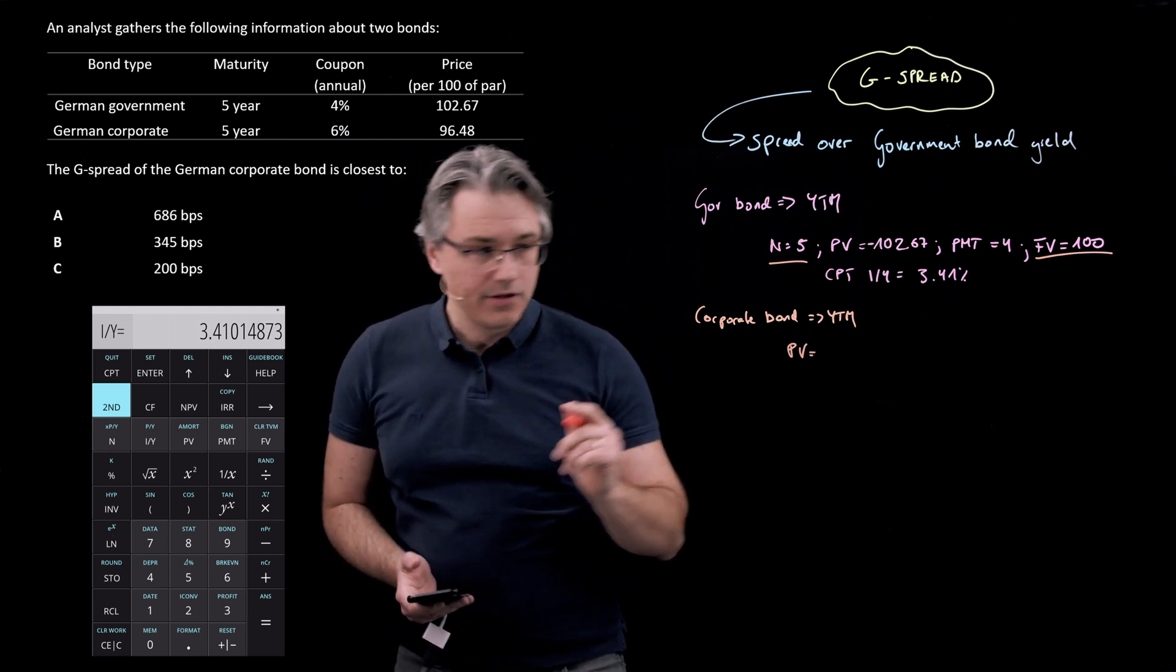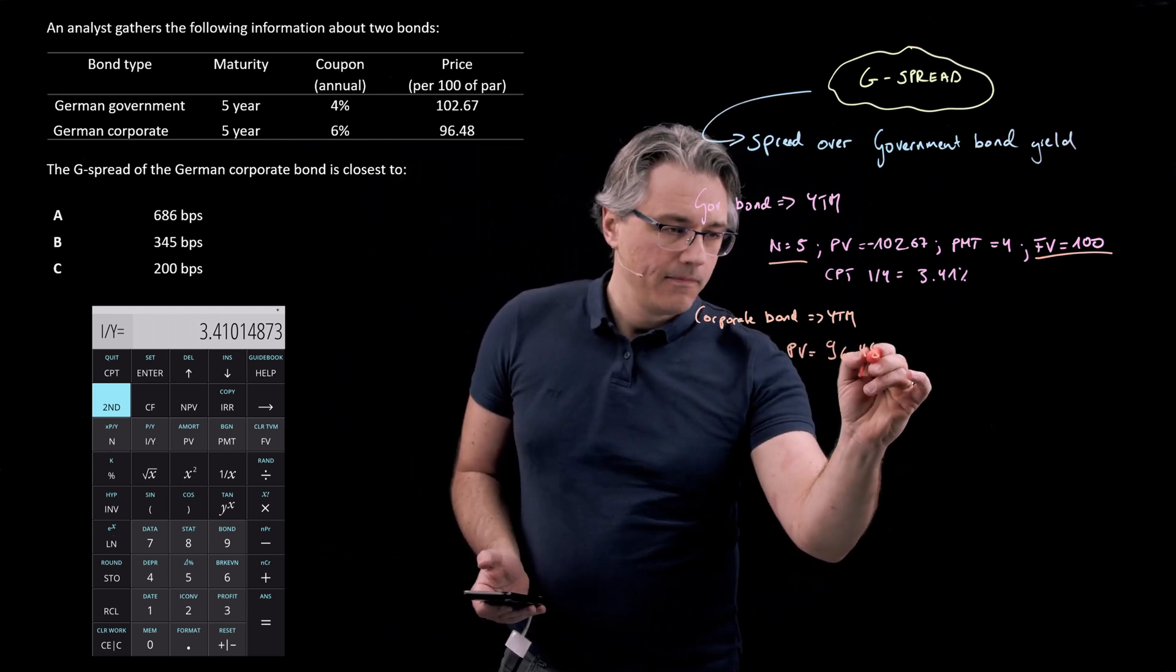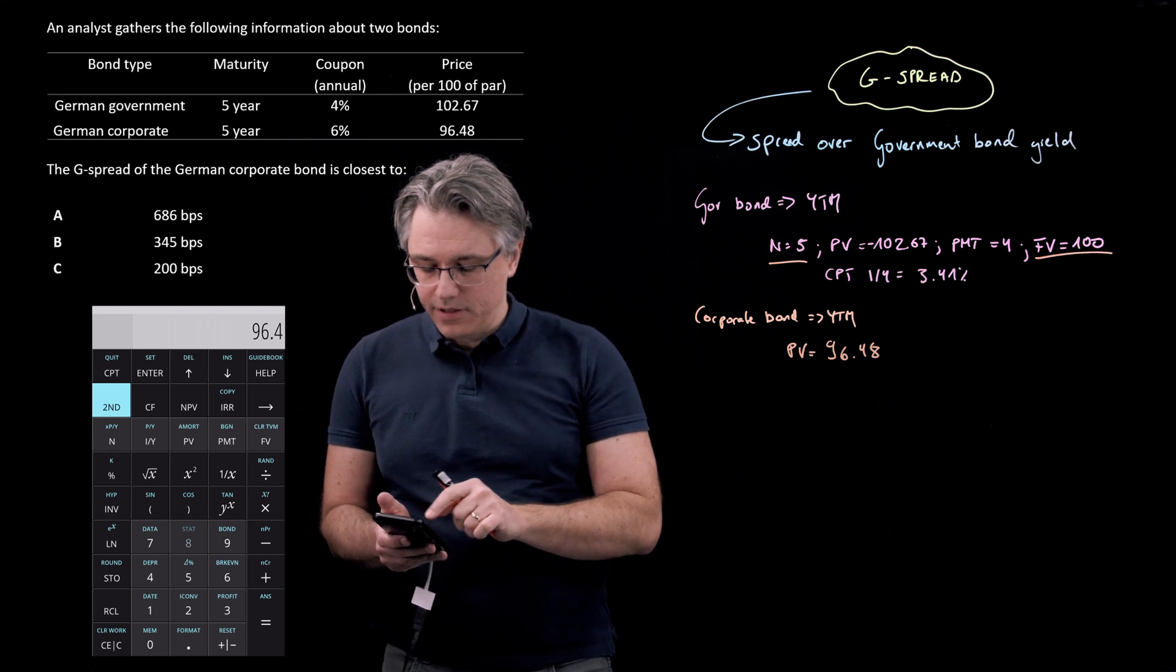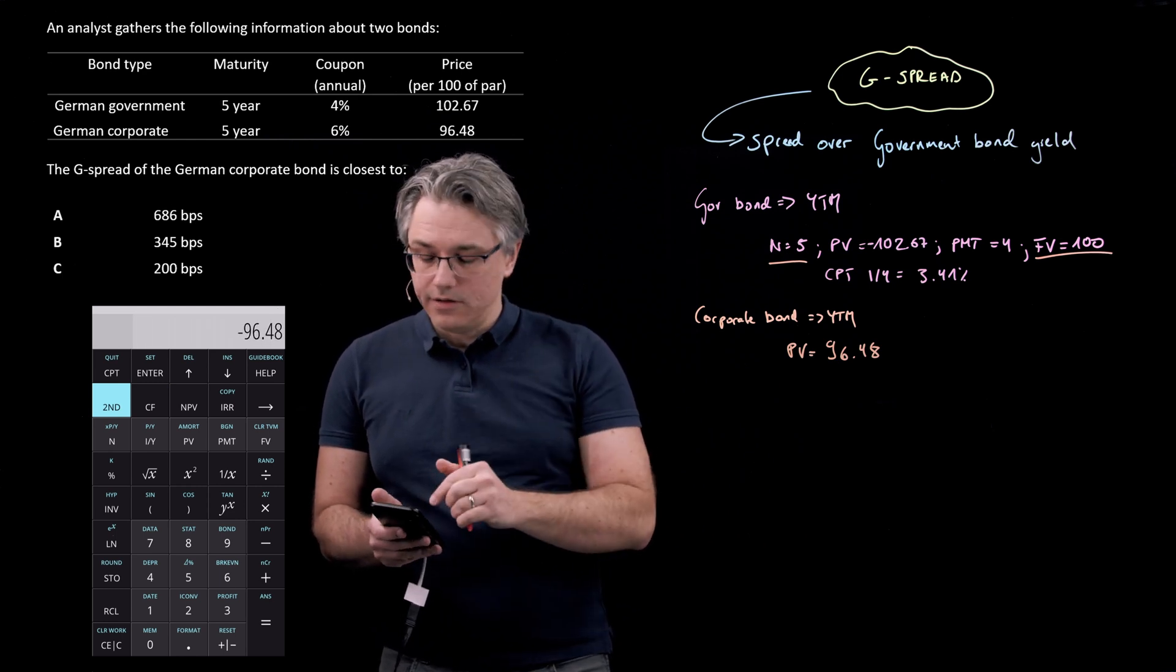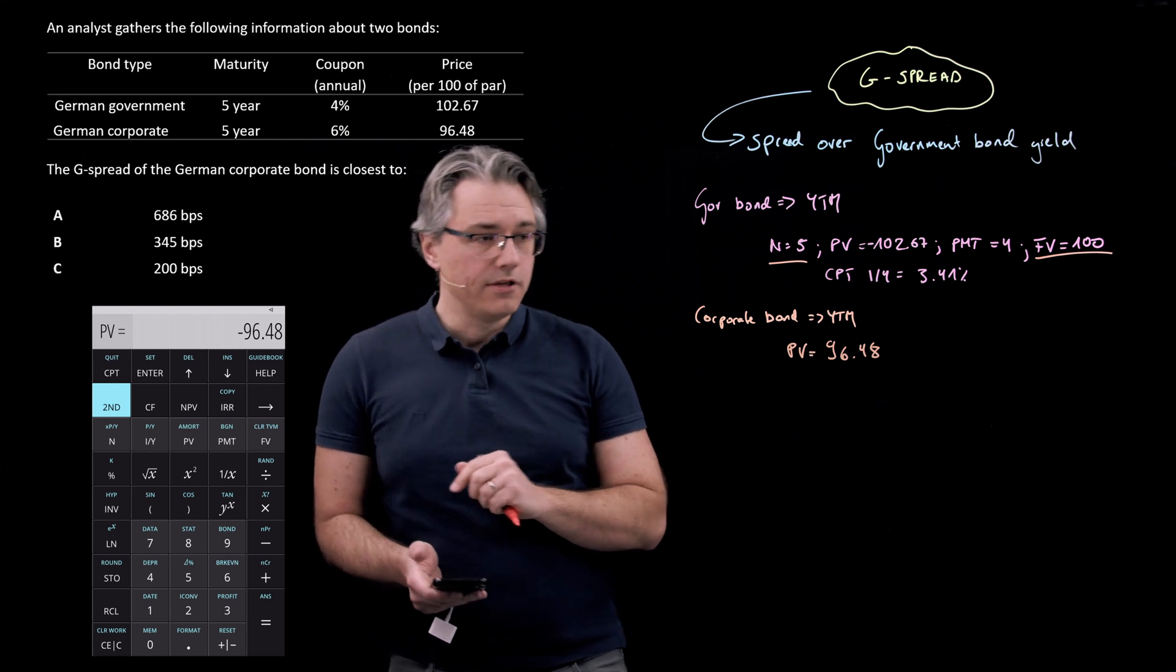So price for this bond is 96.48. Let me input 96.48 plus minus key to turn it into a negative figure, followed by PV. Good.